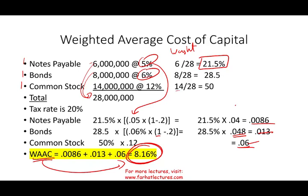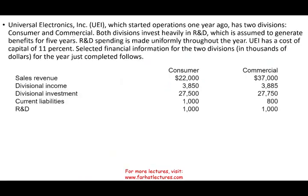Let's look at an example. Universal Electronics started operations a year ago and has two divisions: a consumer division and a commercial division. Both are heavily invested in R&D, which is assumed to generate benefits for five years. R&D spending is made uniformly throughout the year. Universal Electronics has a cost of capital — same as WACC — of 11%. We're given selected financial statements and asked to compute EVA for each division.